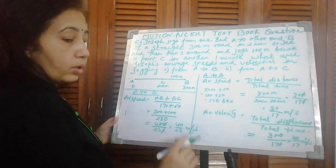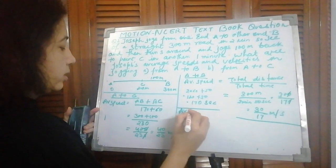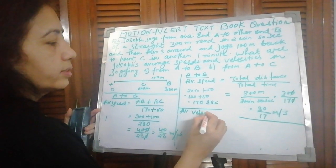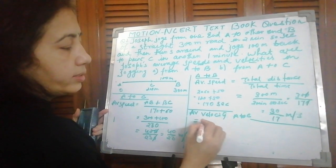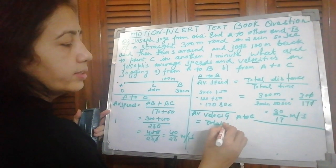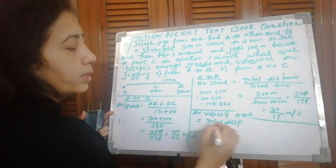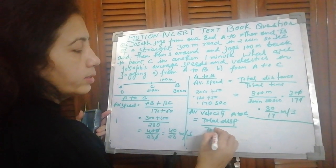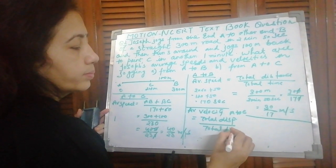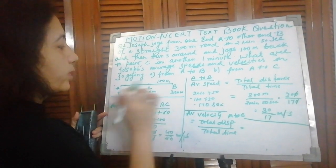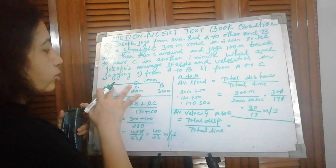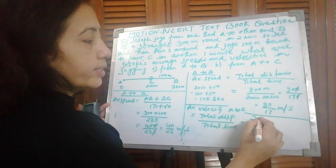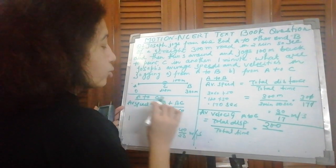Now average velocity A to C. Again, total displacement upon total time. Now A to C displacement is: this was starting, this was end. The distance between these two is 200.